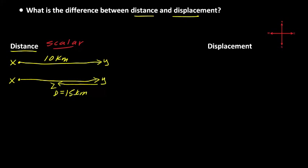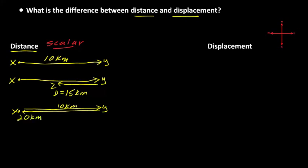Now let's look at a third situation. You started at point X and traveled all the way to point Y — 10 kilometers. Then you turned around and came all the way back home to point X, your origin. That round trip gave you a total distance of 20 kilometers. The distance you traveled was equal to 20 kilometers.